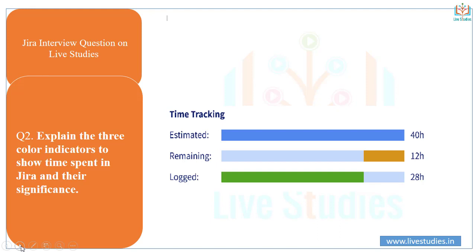The next question: explain the three colors used in time tracking in Jira and their significance. There are three colors — blue, orange, and green — used to show how much time is spent on a particular issue. You can go to the time tracking section to view this information. Blue represents the original estimation — the estimate of time to be spent in resolving an issue. Orange represents the time left to resolve the issue. Green shows the actual time that has been spent in resolving the given issue till now.